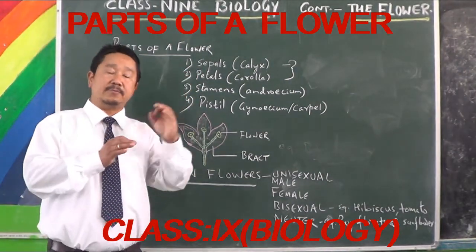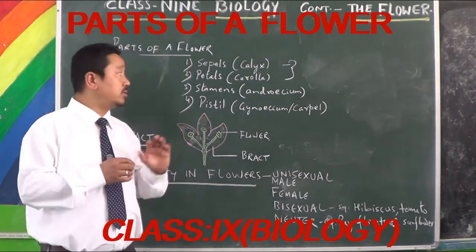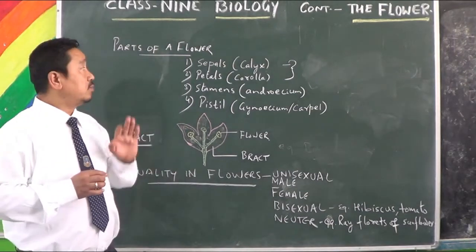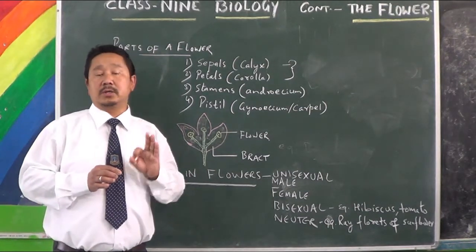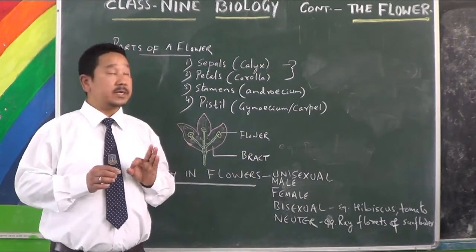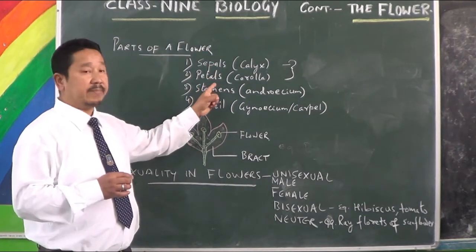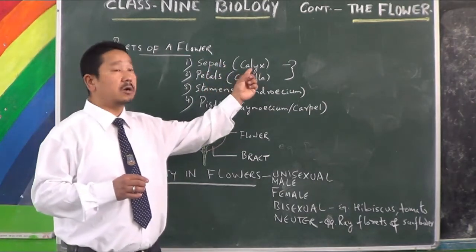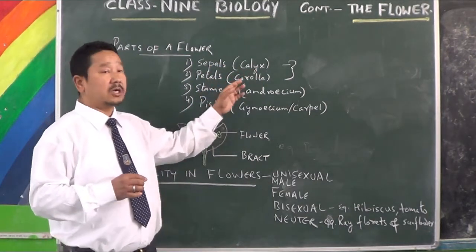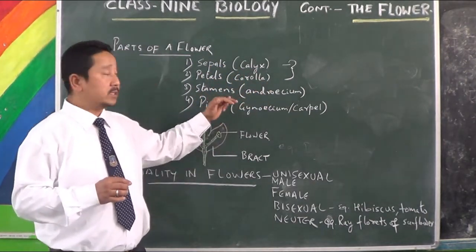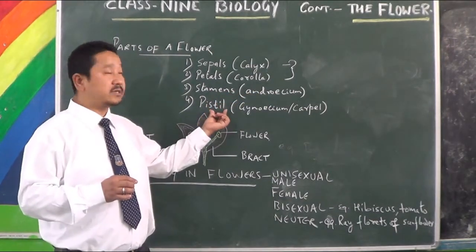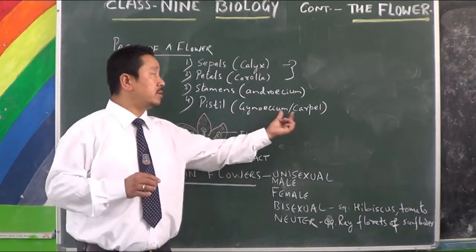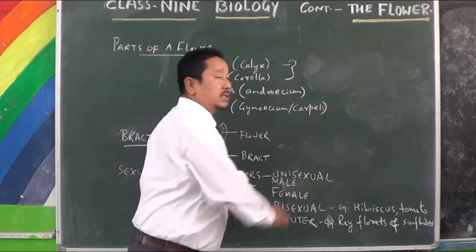As you all know from the last session, our bisexual flower has 4 important parts. They are sepals, petals, stamens, and pistils. Sepals are collectively called calyx. Petals are collectively called corolla. Stamens are collectively called androecium. And pistils are collectively called gynoecium, or carpels.